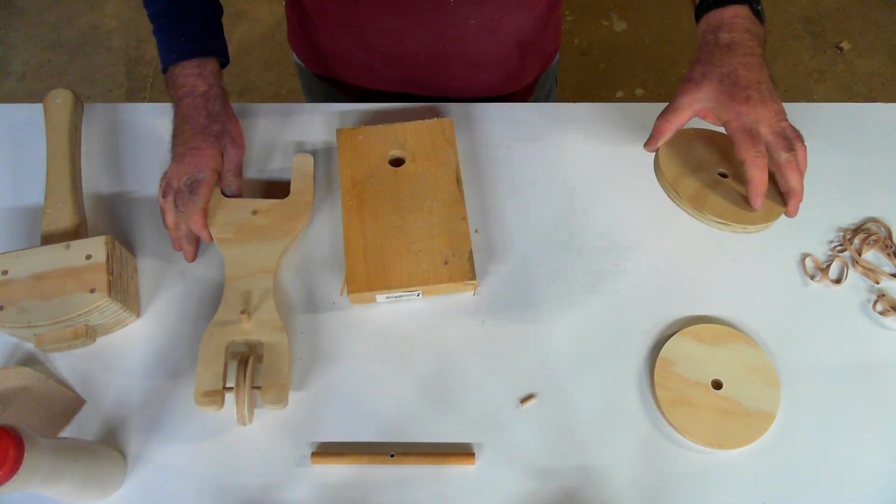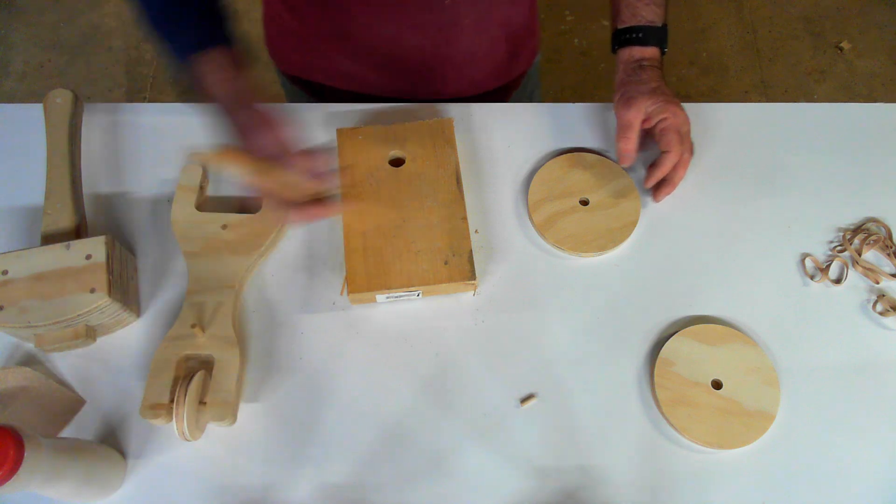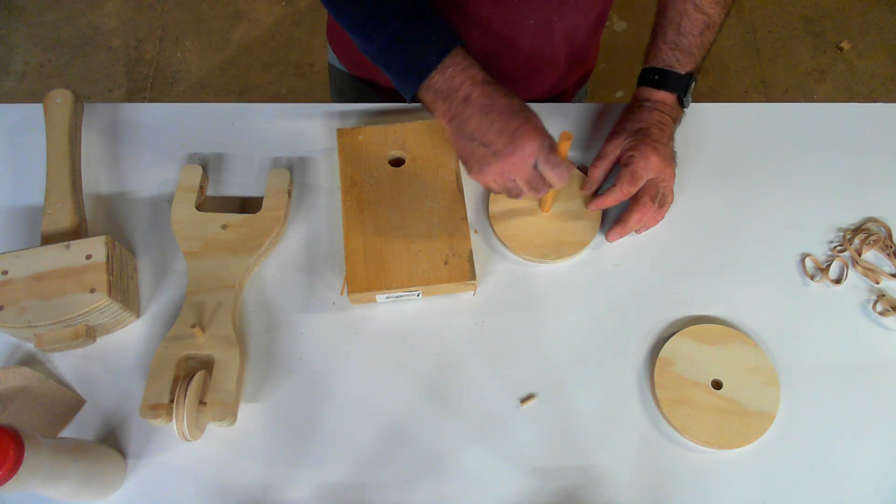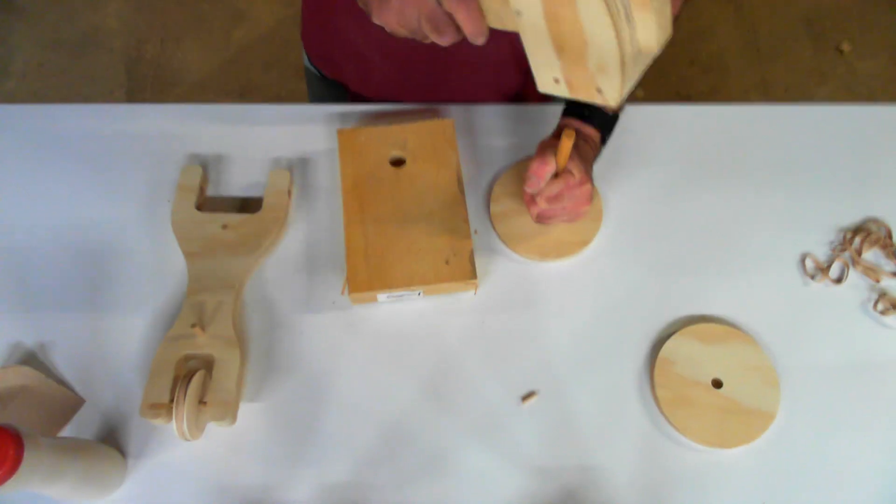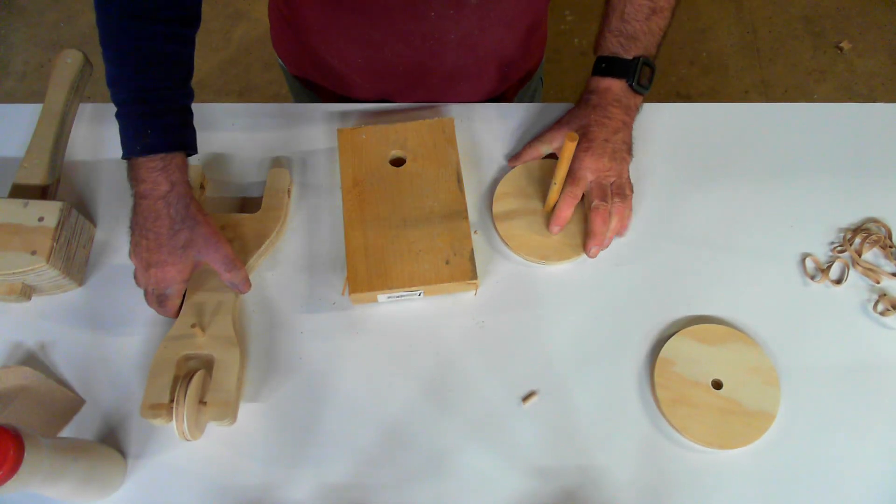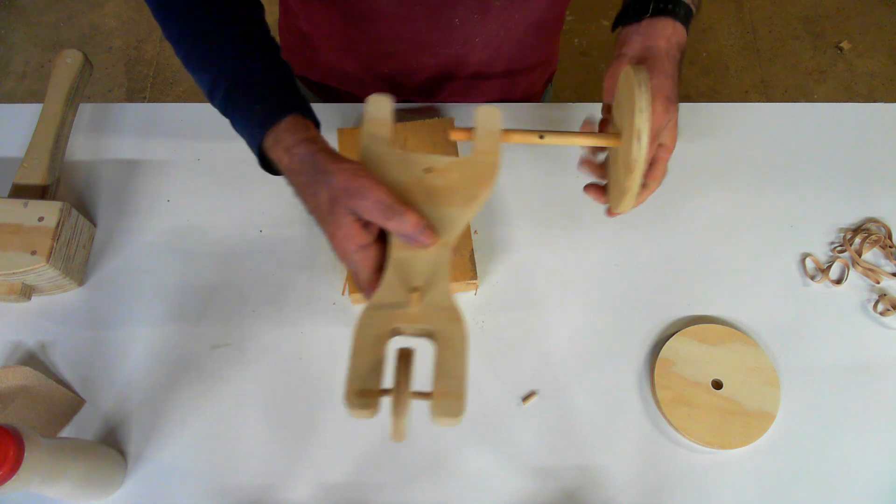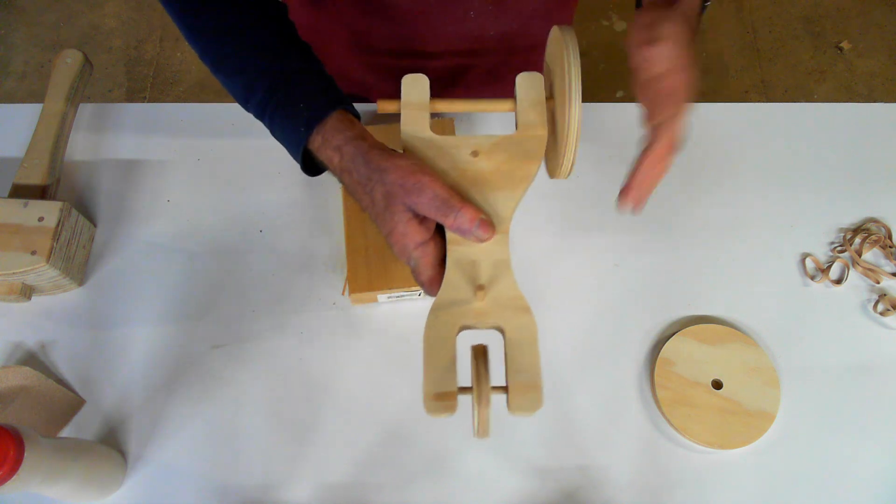So next we're going to build the back axle. So we've got the one wheel, put the half inch dowel in, tap it in tight. Slip it through this axle hole, this pocket here. Make sure everything spins. If some glue got in there, a couple of good spins will take care of it.